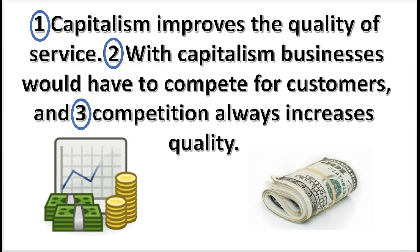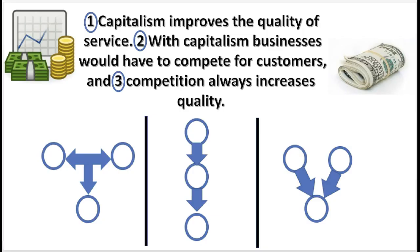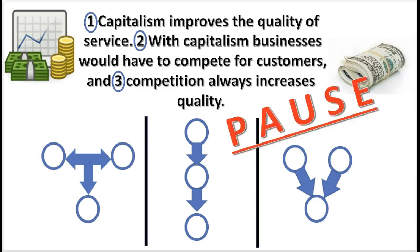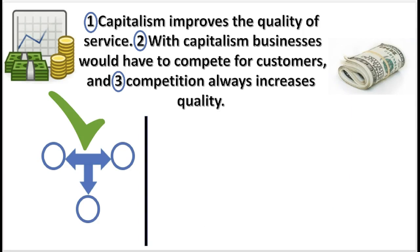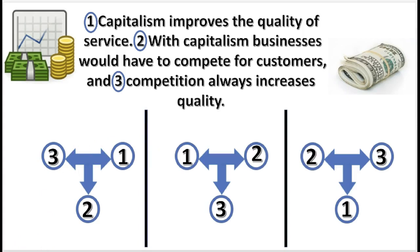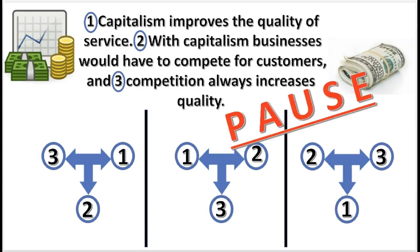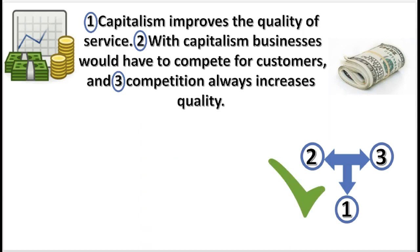Take a look at this argument. First we are going to begin by selecting the pattern for this argument. Go ahead and press pause — the two premises support the conclusion conjointly. That is correct. Next, choose the correct sequence of numbers in the argument. Press pause. Two and three support one conjointly. That is correct.